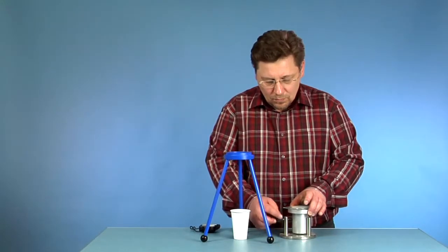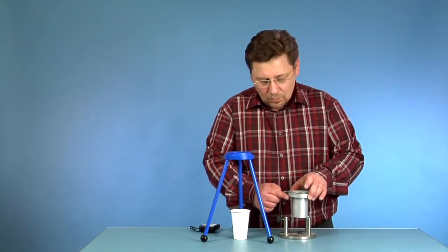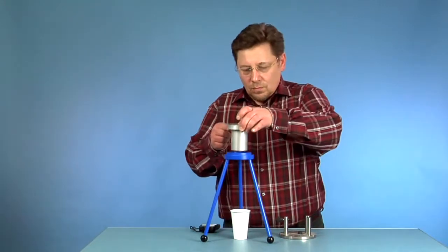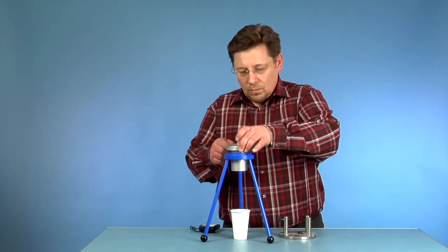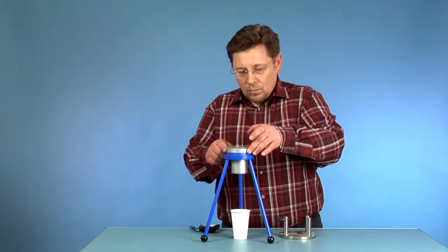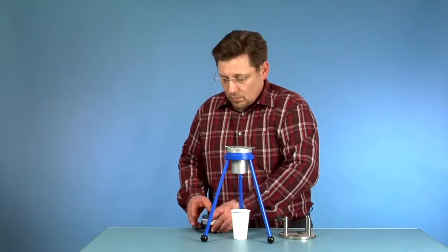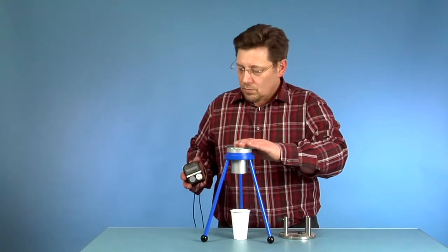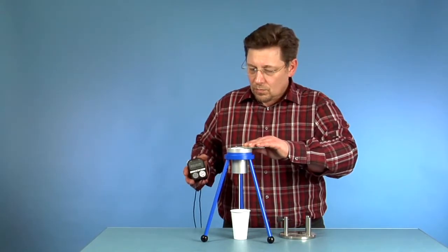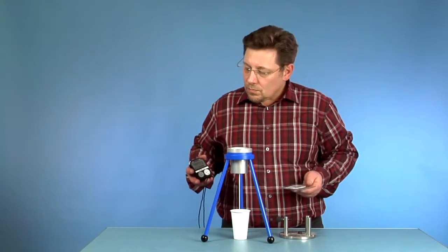Remove the flow cup from the filling support stand and insert it in the tripod stand. Remove the glass plate and start the calibrated stopwatch simultaneously.